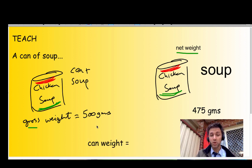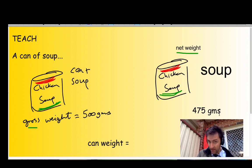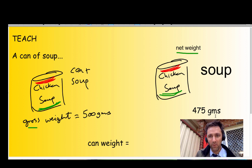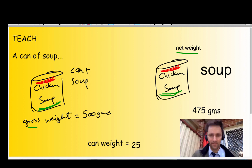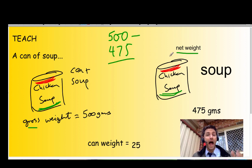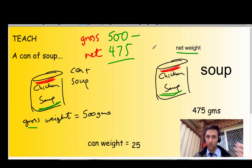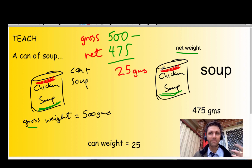If you're clever, you can work out the weight of the can. The weight of the can equals the difference between the gross weight and the net weight, which is 500 take away 475, giving us 25 grams. The gross weight take away the net weight equals 25 grams.